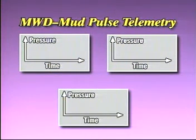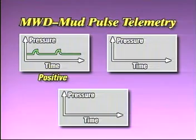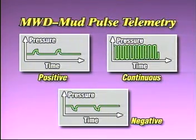MWD tools operate by creating pressure pulses in the mud column in response to inputs from the various sensors. Depending on the type of tool, the pulses may be positive, negative or continuous. These pulses are converted into electronic signals which are processed and displayed at the surface.